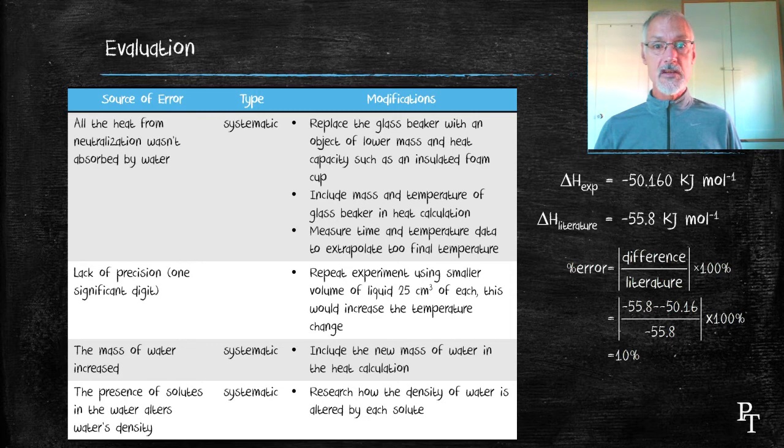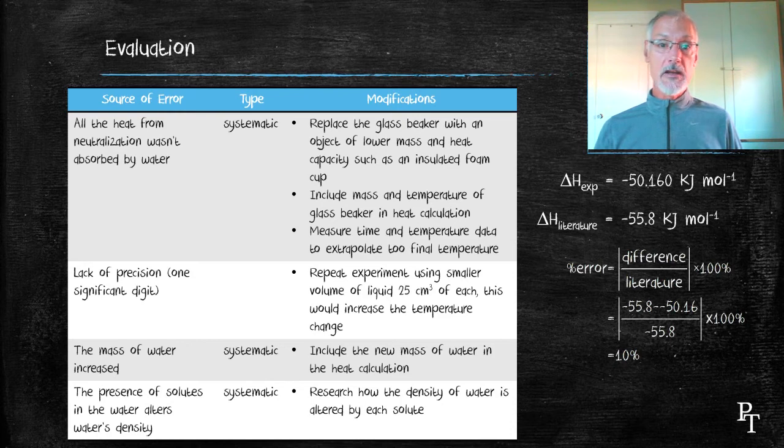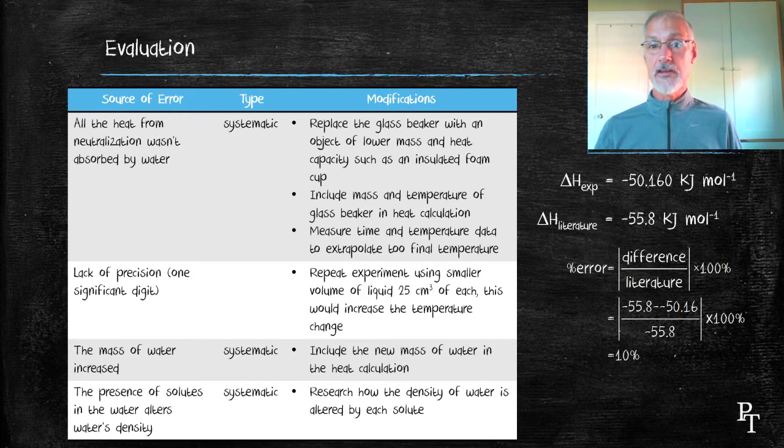The way to get a bigger temperature change is to reduce perhaps the volumes of my liquids to 25 milliliters of each one, thereby probably getting almost twice the temperature change, 1.2 degrees, which improves my significant digits by one.